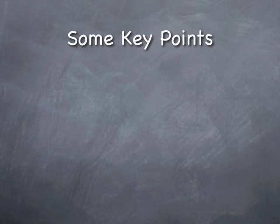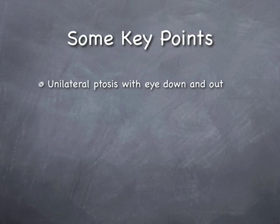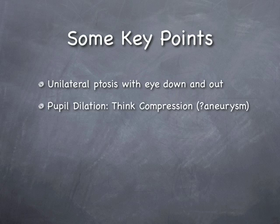A few key points once more. The oculomotor palsy is characterized by unilateral ptosis and an eye that is down and out. Pupil dilation suggests compression, possibly by Berry aneurysm.